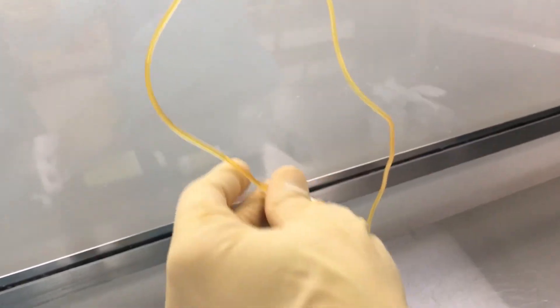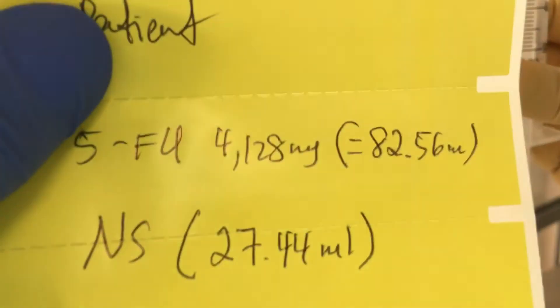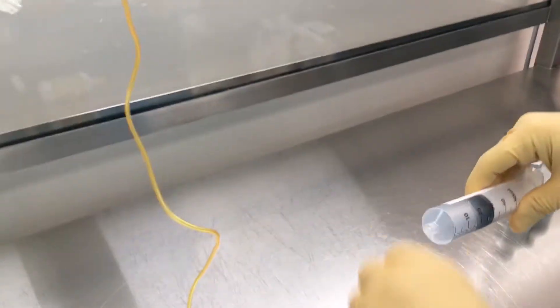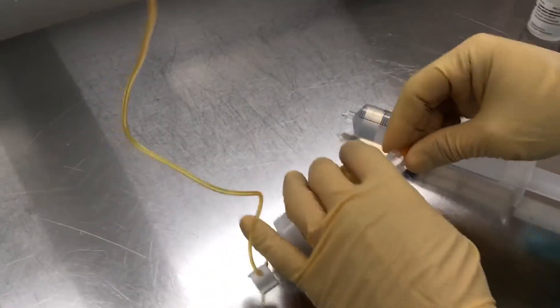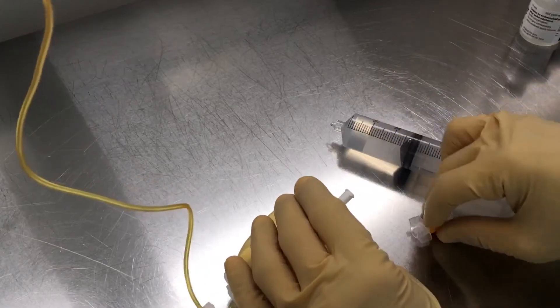Next, we're going to open this. We're going to draw up the volume of NS that was on the label: 27.44 ml. This whole volume is going to go inside the pump, and it will prime the tubing.